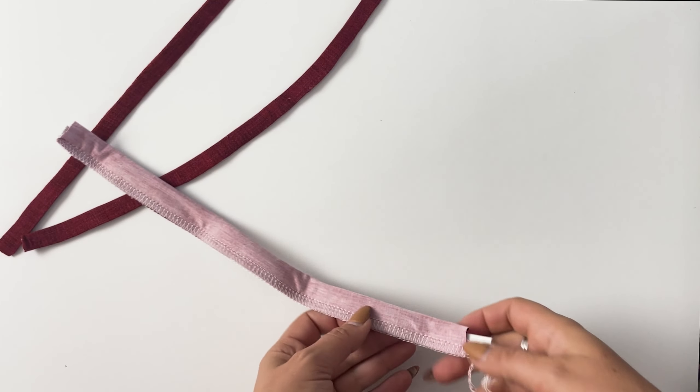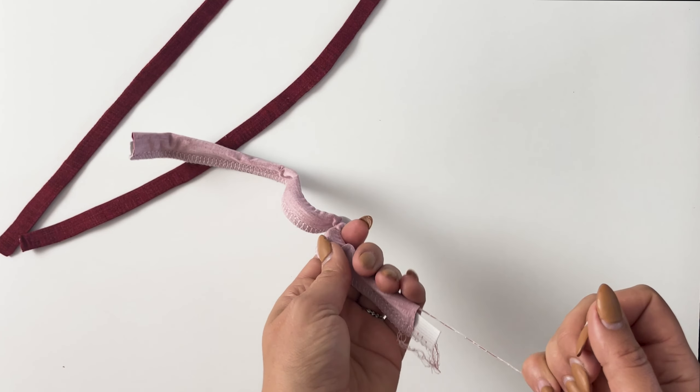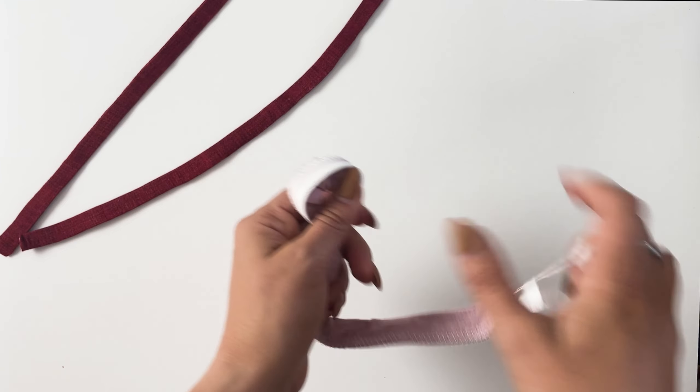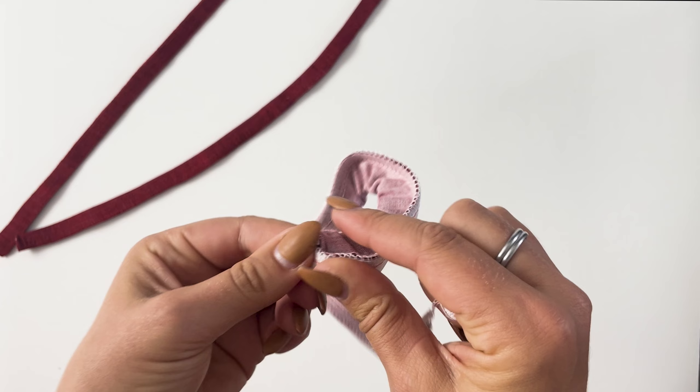With the serger tail method you slowly but firmly begin to pull the serger tail. Once this end starts going in through, you can continue to pull the strap right sides out.